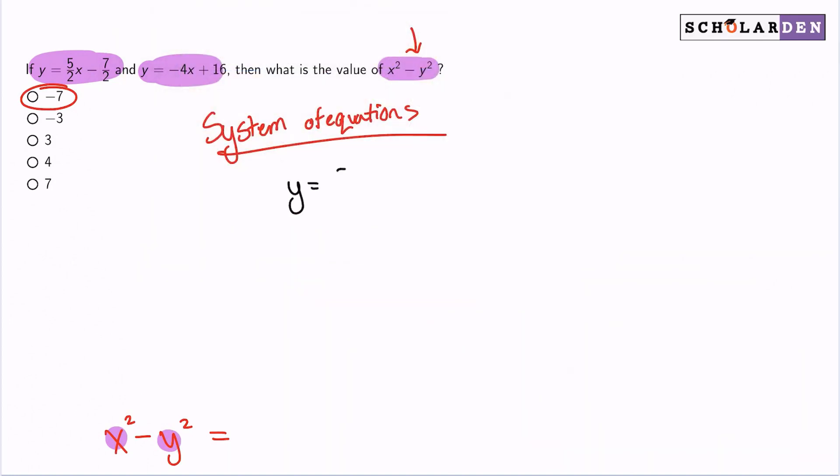So we have y equals 5 halves x minus 7 halves, and then we also have y equals negative 4x plus 16. Since this y and this y are the same, essentially we're trying to figure out where these two equations have the same y. The way that we're going to figure that out is by setting the equations equal to each other. So 5 over 2x minus 7 halves equals negative 4x plus 16.